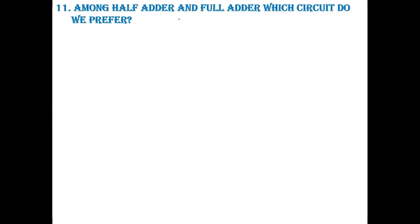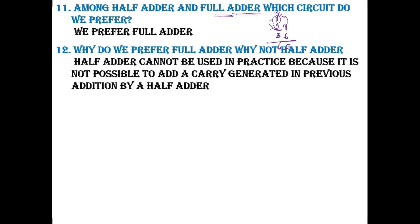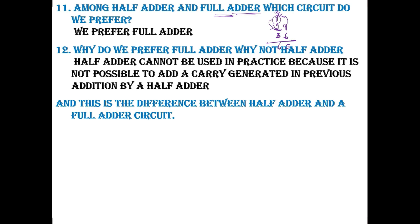Among half adder and full adder, which circuit do we prefer? Obviously we prefer full adder. The reason is, suppose if I have decimal number I am taking, 29 plus 36, what do you do? 9 plus 6 is 15, carry 1, then 1, 2, 5 plus 3 is 6, correct? Whereas 1 is the carry from previous addition. So half adder cannot be used in practice because it is not possible to add a carry generated in previous addition by a half adder. And this is the difference between half adder as well as full adder.